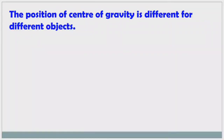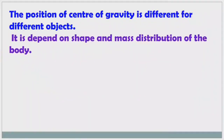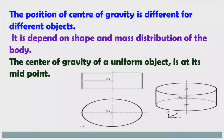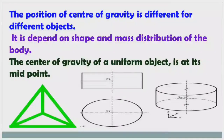The position of center of gravity is different for different objects — it depends on the shape and mass distribution of the body. The center of gravity of a uniform object is at its midpoint or geometric center. For all uniform or regular shaped objects, the center of gravity lies at the midpoint.